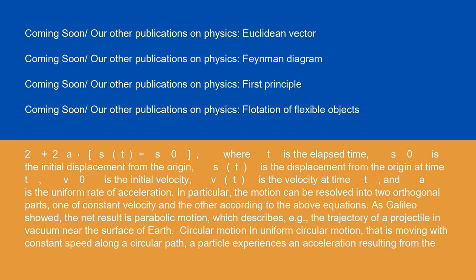Where t is the elapsed time, s₀ is the initial displacement from the origin, s(t) is the displacement from the origin at time t, and v₀ is the initial velocity. In particular, the motion can be resolved into two orthogonal parts, one of constant velocity and the other according to the above equations. As Galileo showed, the net result is parabolic motion, which describes the trajectory of a projectile in vacuum near the surface of Earth.